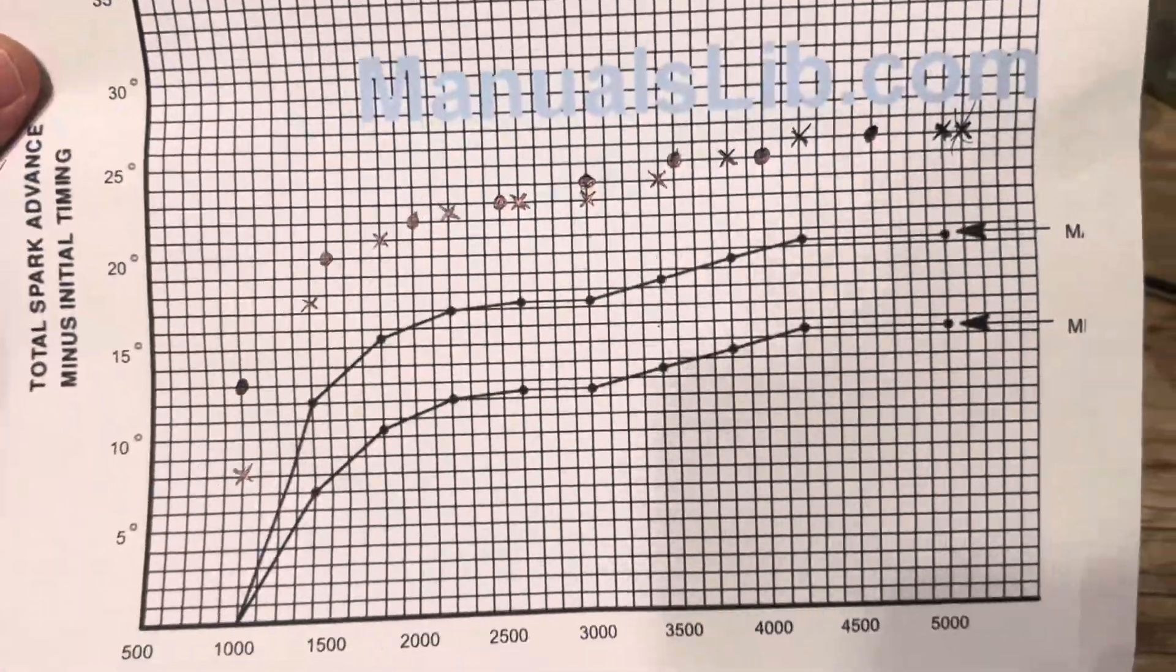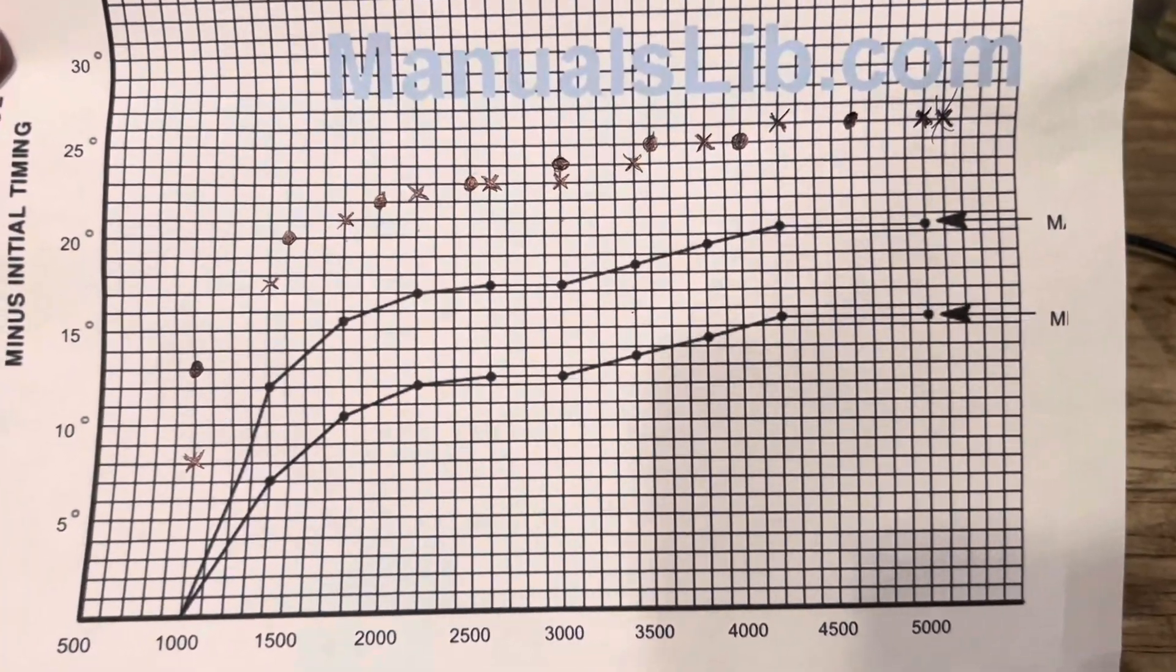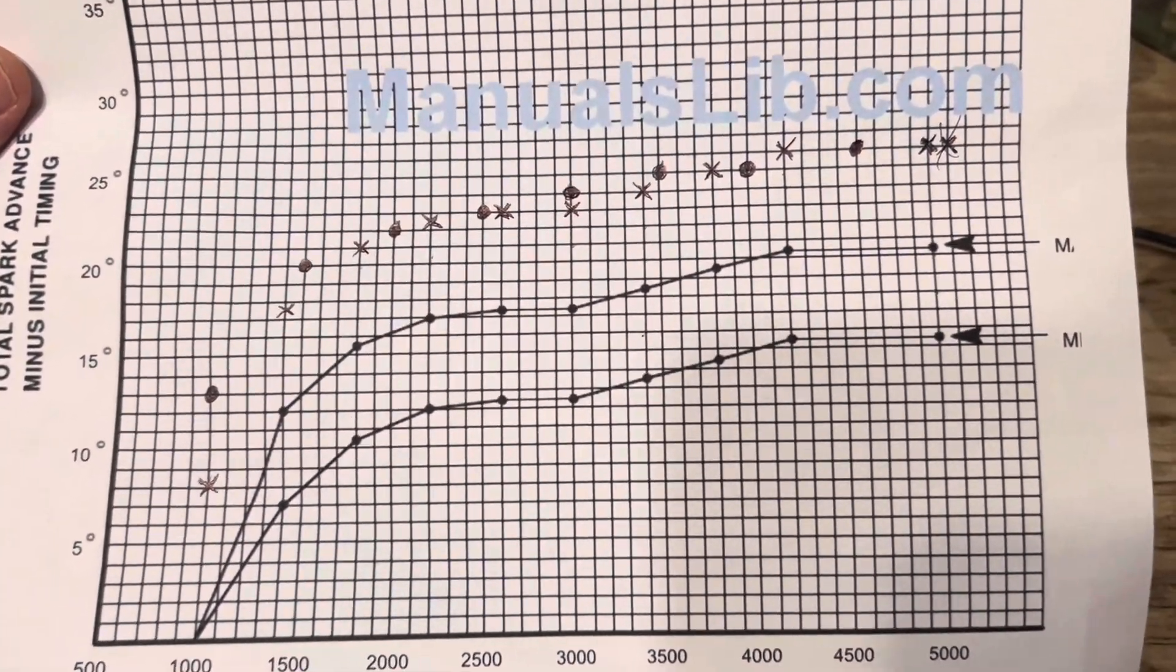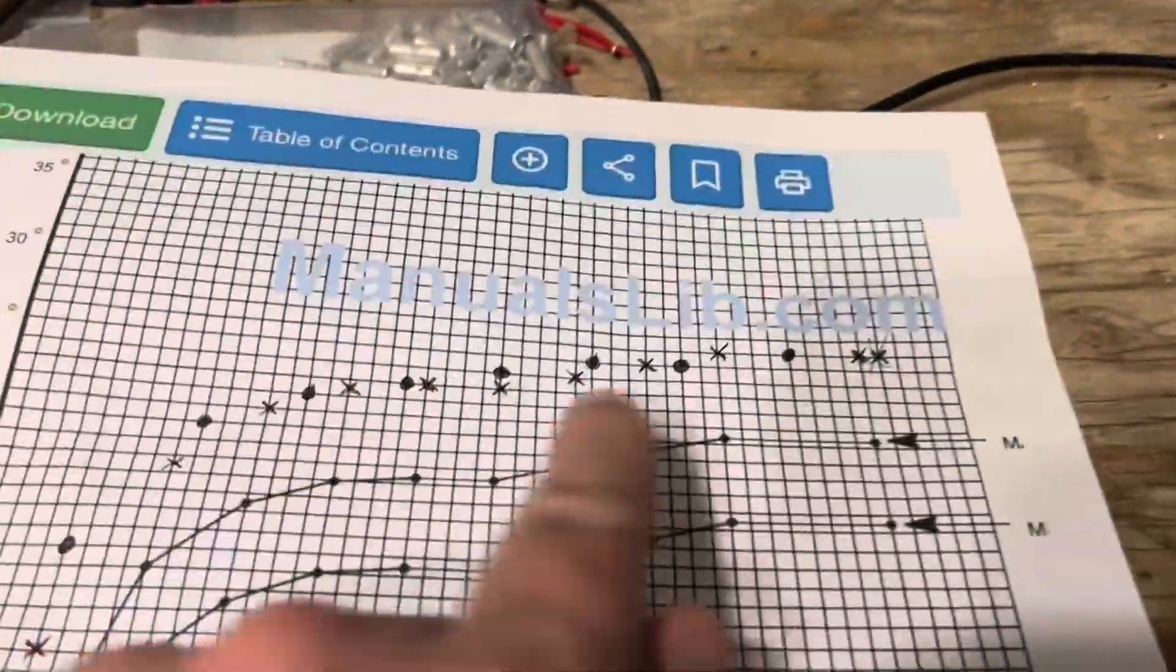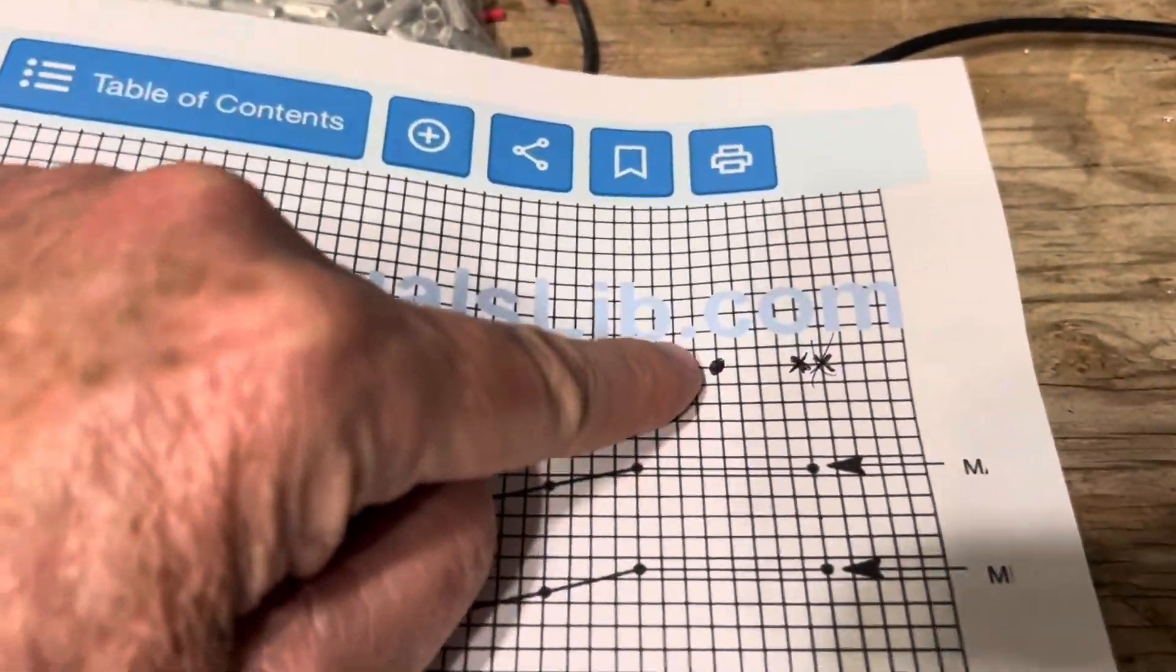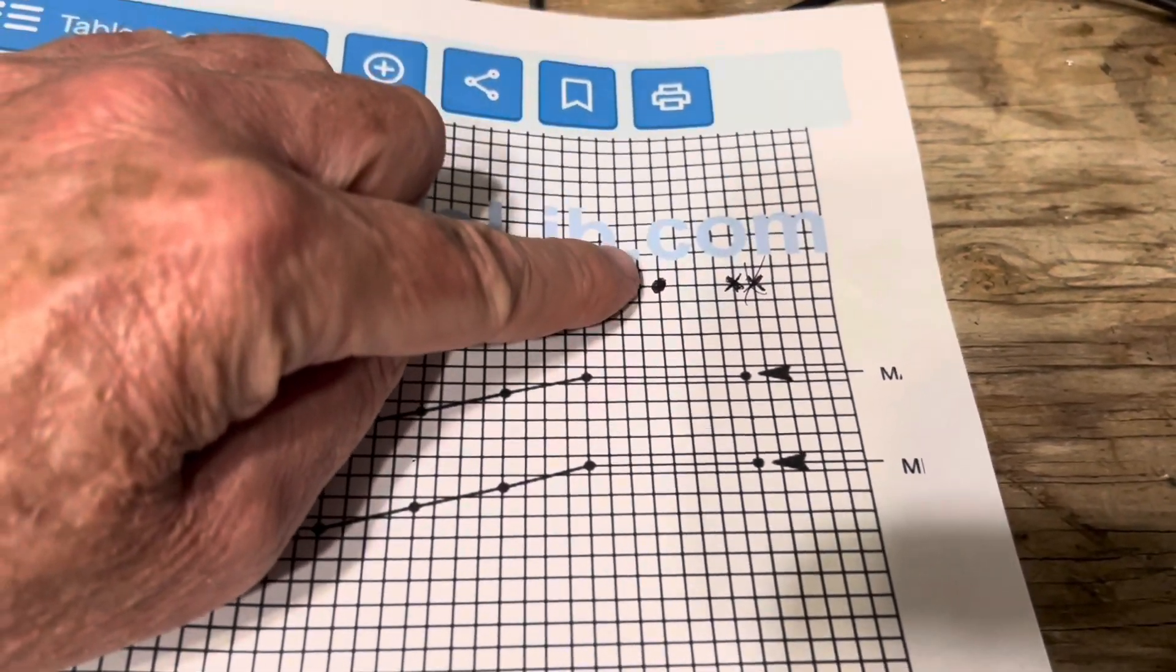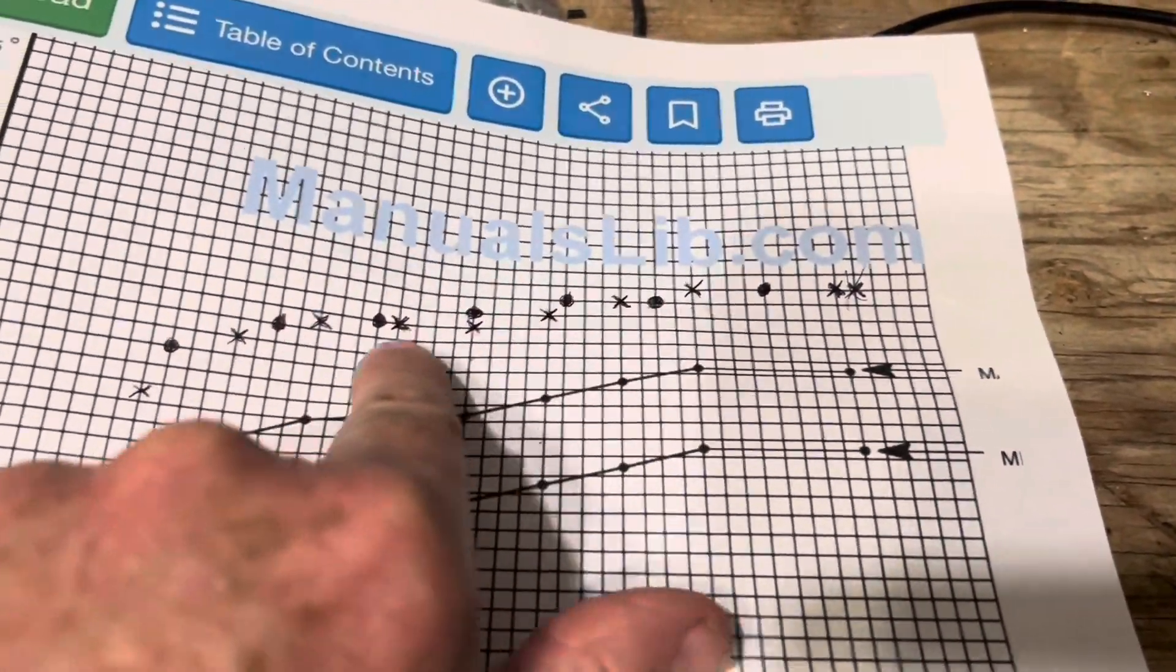Those X's that you see are the eight degrees added to these curves plotted. All right, so that's your total timing of this system with the base timing added in with the distributor set to eight degrees. So then after I got that plotted, I went back and got the Delco EST curve. So the Delco EST curve was a maximum of 21 degrees at the highest RPM, which was 4,600. So that would be this dot right here.